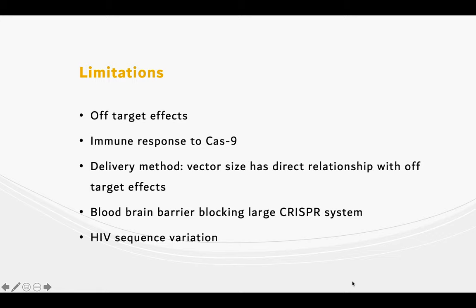In turn, that means more opportunity for off-target effects. The blood-brain barrier also blocks the large Cas9 system from entering, and HIV sequences vary, so not all guide RNAs may be complementary enough to be successful.